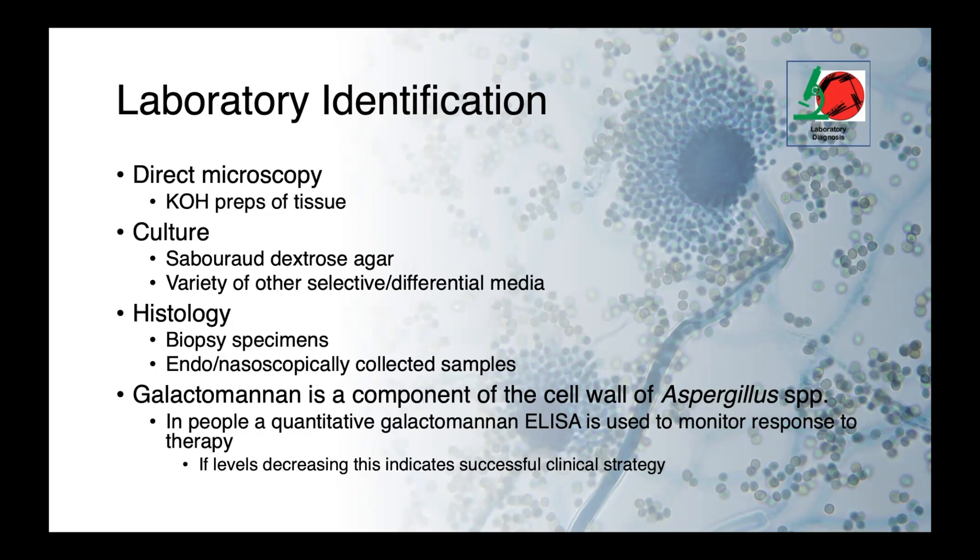In human diagnostics, there's a quantitative galactomannan ELISA which is used to monitor response to therapy for people with invasive Aspergillus infections. Galactomannan is a component of the cell wall of Aspergillus, and by measuring how much is present in the blood, a physician can assess whether the therapeutic strategy is successful. Decreasing levels of galactomannan in the blood are what you want to see. This test is not yet used in veterinary medicine, but may become relevant as we see a growing immunosuppressed population of companion animals with more invasive Aspergillus infections.